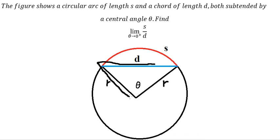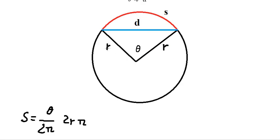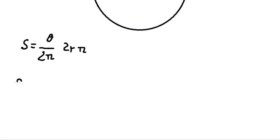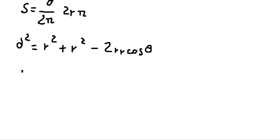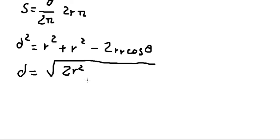For d, we concentrate on this triangle. We have d, r, and theta. We can find d in terms of r and theta using the law of cosines: d squared equals r squared plus r squared minus 2r squared cosine theta. Taking the square root of both sides, we get d equals the square root of 2r squared minus 2r squared cosine theta.